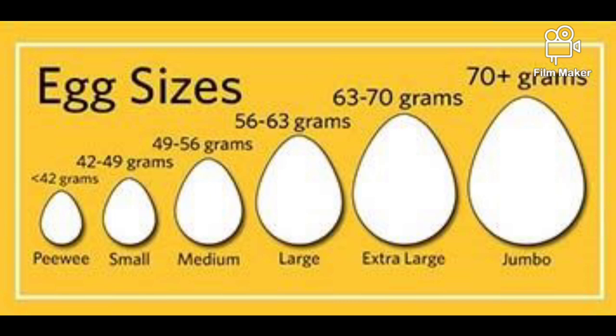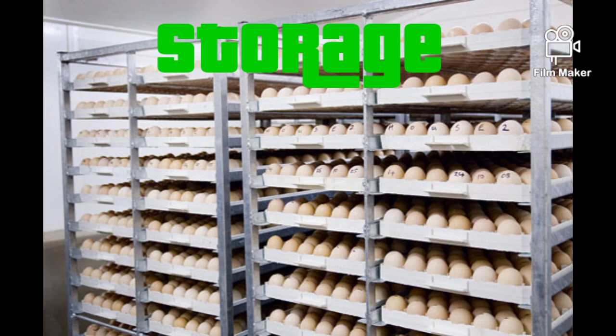Egg size classification: Jumbo — 70g (850g/dozen); Extra Large — 60–65g (765g/dozen); Large — 55g (680g/dozen); Medium — 48g (595g/dozen); Small — 40g (510g/dozen); Peewee — 35g (425g/dozen).